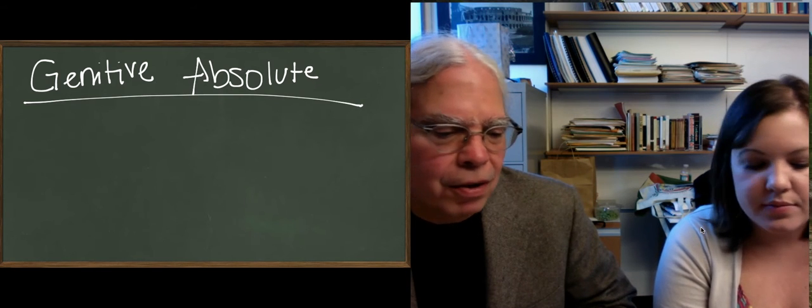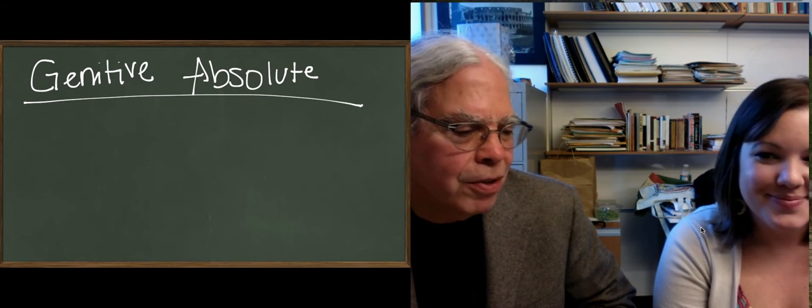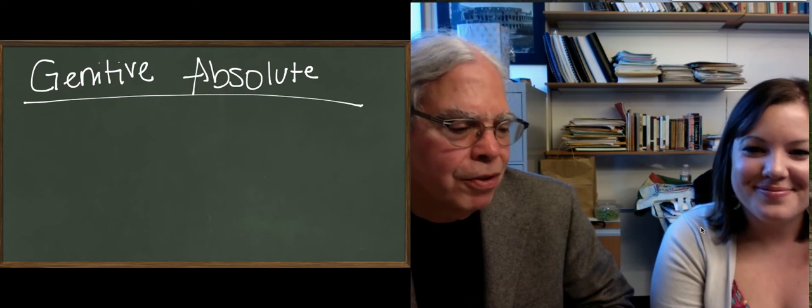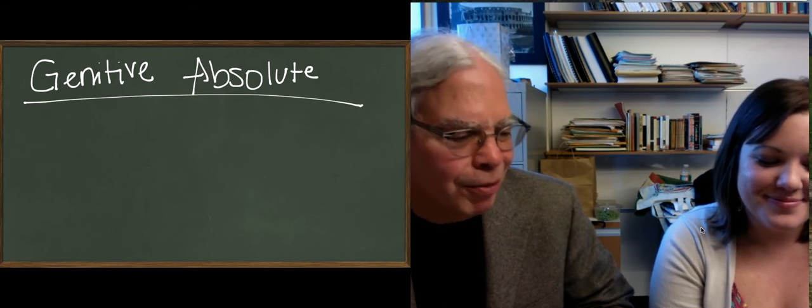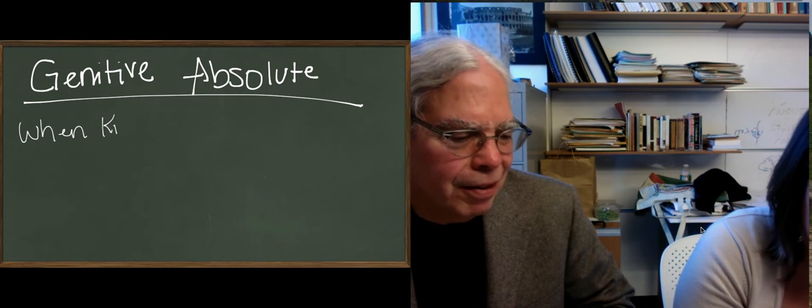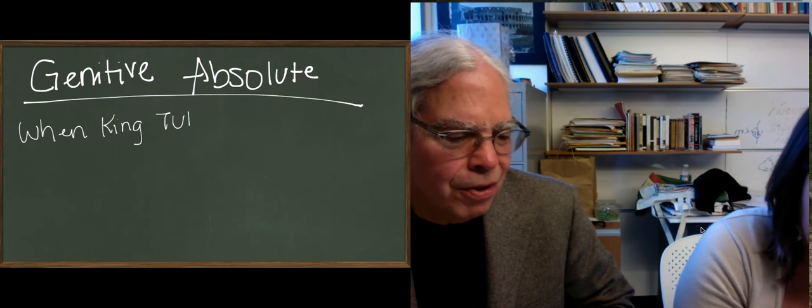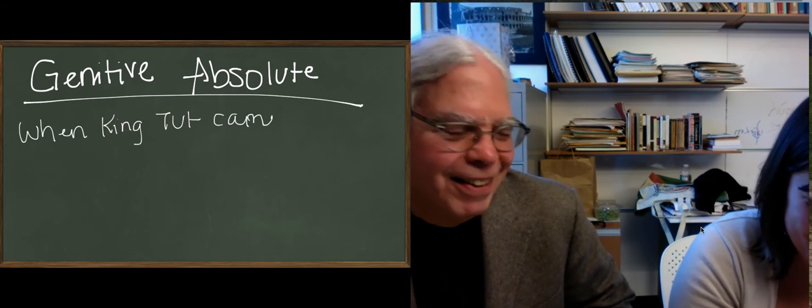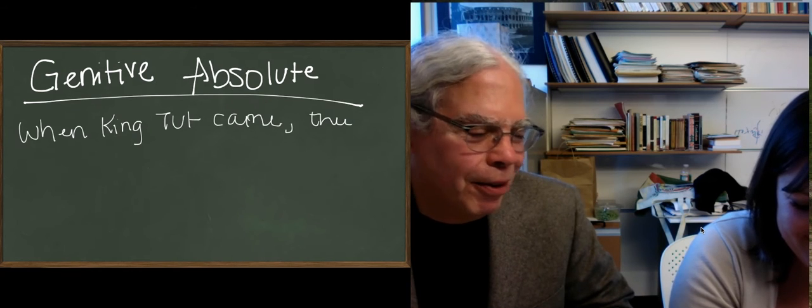Here's my stupid example of what a sentence with a grammatically absolved subordinate clause is: 'When King Tut came, they tethered their elephants.' You can write this down. Who did?